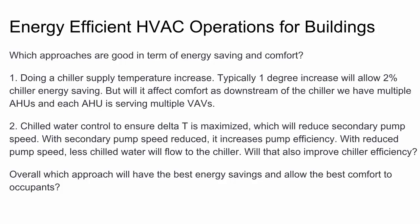And the second idea, chilled water control to ensure delta T is maximized, which will reduce secondary pump speed. With secondary pump speed reduced, it increases pump efficiency. With reduced pump speed, less chilled water will flow to the chiller. Will that also improve chiller efficiency?